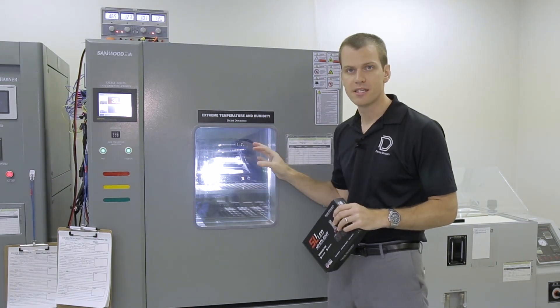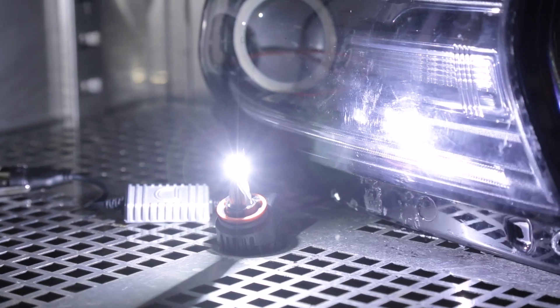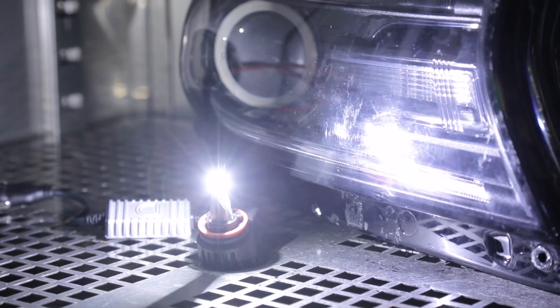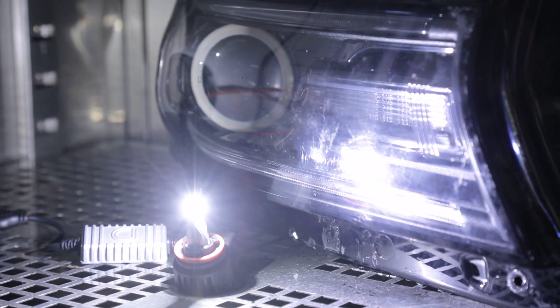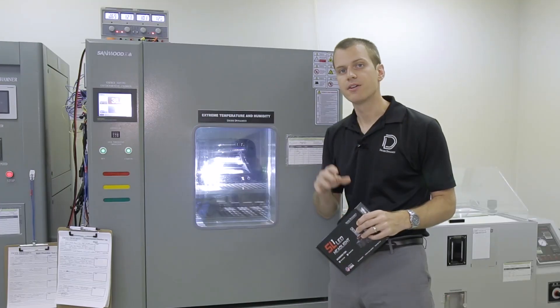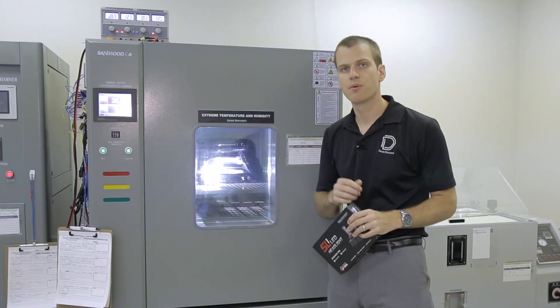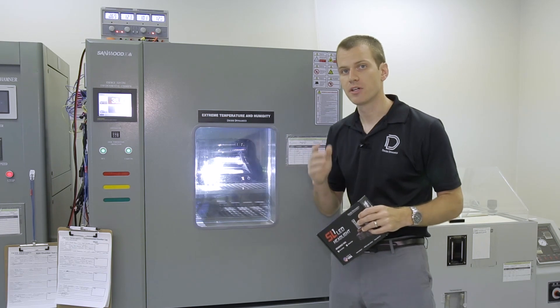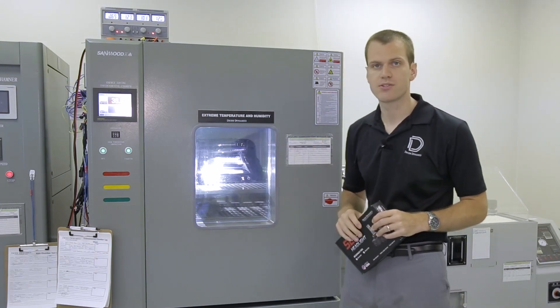Then we'll also install them inside of headlamps. You can see you've got a headlight sitting there as well to make sure that even with reduced airflow, when it's sealed in a headlight, our bulbs will continue to work with no problem. Again, how do we know? Because we're doing the tests required.